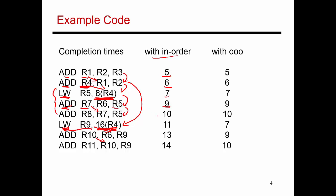Continuing on, the next add finishes in the next cycle, then the load finishes in the next cycle. There's a dependence between these two, and since it's a load, you need one stall cycle, so it finishes in cycle 13. The last instruction finishes in cycle 14. So executing this on the in-order processor, it takes about four cycles to warm up the pipeline, but in the next 10 cycles you finish all eight instructions. Ignoring warm-up, the CPI is 10 cycles for eight instructions, with two stall cycles — one from each load feeding the subsequent add.